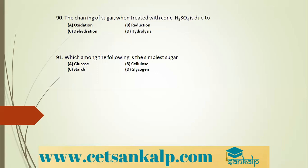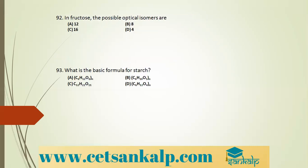Q: Charring of sugar when treated with concentrated sulfuric acid is due to dehydration. Concentrated H2SO4 is a dehydrating agent — it removes water from sugar, causing it to char. Correct option C. Q: The simplest sugar (monosaccharide) among the options is glucose. Cellulose, starch, and glycogen are polysaccharides. Glucose is the simplest sugar.